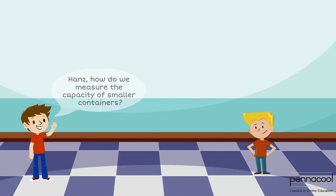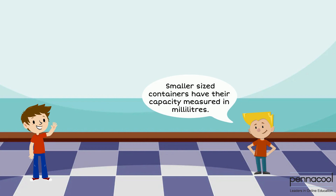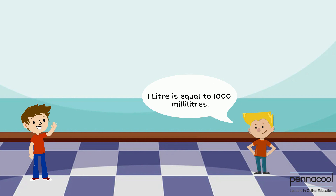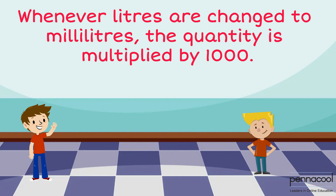Jonah then asks Hans how the capacity of smaller containers is measured. Hans explains that smaller sized containers have their capacity measured in millilitres. 1L is equal to 1000 millilitres. Whenever litres are changed to millilitres, the quantity is multiplied by 1000.